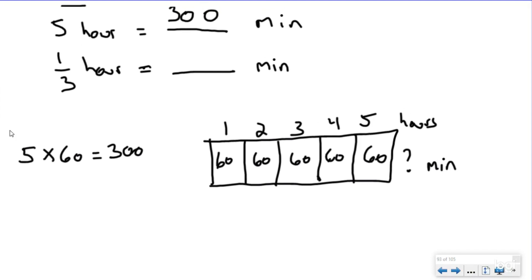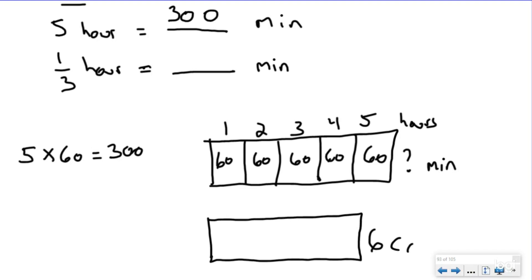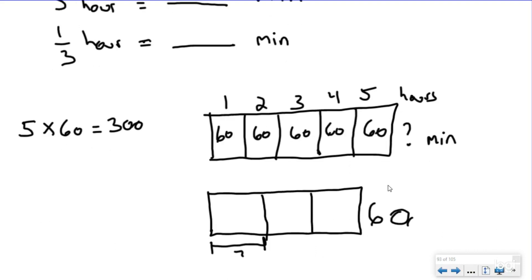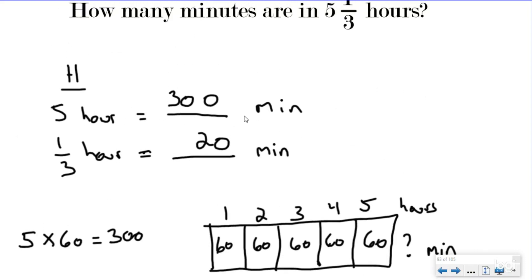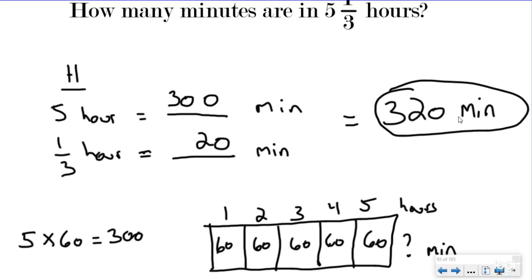Now I need to figure out what is one-third of an hour. I'm going to use a fraction model, and I know there are 60 minutes total in an hour. I want to split this into three equal groups — I'm making a fraction model to figure out what is one-third of 60. You can check out our video linked right here on how to multiply fractions and whole numbers. If I divide 60 into three equal groups, that's going to be 20 minutes in each. So one-third of an hour equals 20 minutes. Five hours was 300 minutes, one-third of an hour was 20 minutes — when I add those together, I get 320 minutes equal to five and one-third hours.